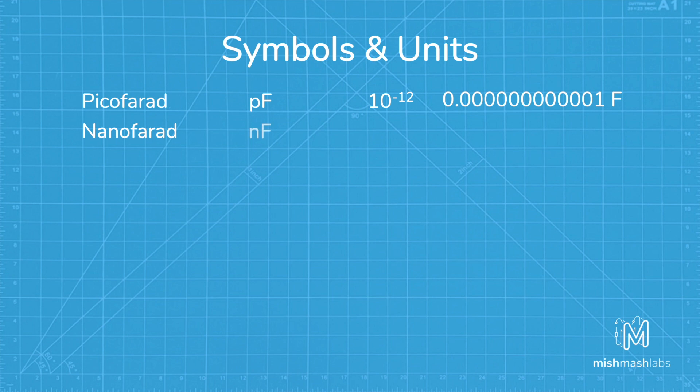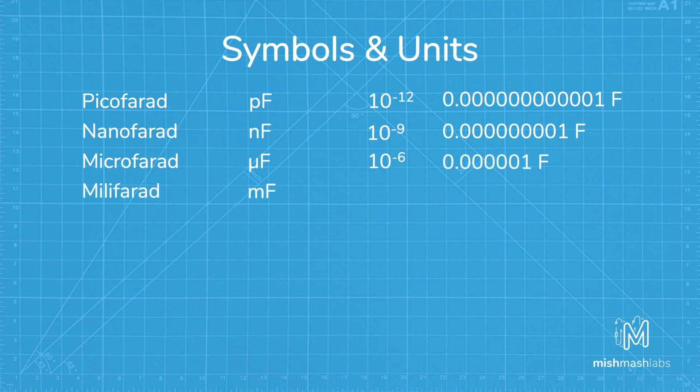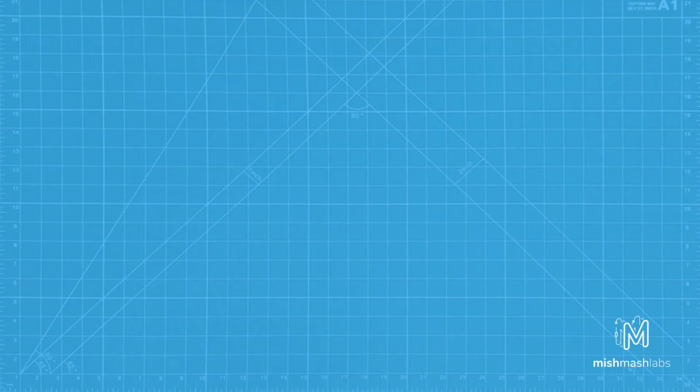You'll usually see capacitors rated in the picofarad, which is 10 to the minus 12, all the way to the microfarad, which is 10 to the minus 6 range. Millifarad, farad and kilofarad capacitors do exist but are incredibly rare.